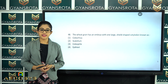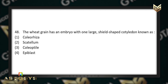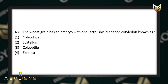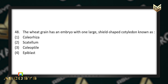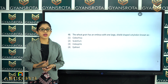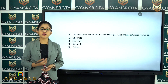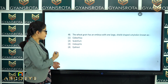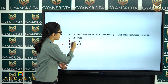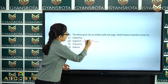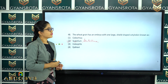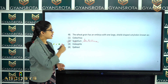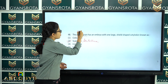The next question is question number 48. The wheat grain has an embryo with one large, shell-shaped cotyledon known as coleorrhiza, scutellum, coleoptile, or epiblast? From the chapter Sexual Reproduction in Flowering Plants, the correct answer is option number 2 — scutellum. Note the spelling in the question has an error; the correct spelling uses 'u' not 'a'. Wheat grain is a monocot, and its large shell-shaped cotyledon is called the scutellum.